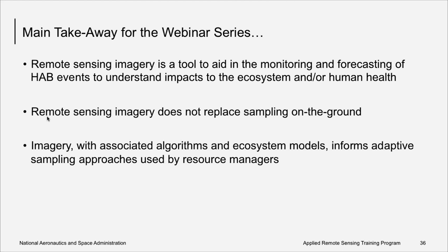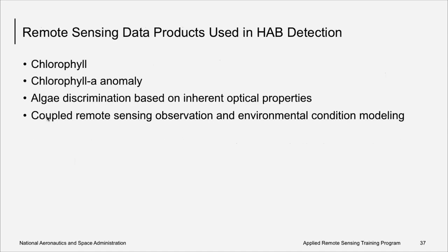So some of the main takeaways, it's important to note that remote sensing imagery is a tool to aid in monitoring and forecasting of HAB events to understand impacts to the ecosystem and or human health. Remote sensing imagery does not replace sampling on the ground. Imagery with associated algorithms and ecosystem models informs adaptive sampling approaches used by resource managers. Some of the remote sensing data products used in HAB detection include understanding the chlorophyll concentration because chlorophyll is a proxy for phytoplankton, a chlorophyll anomaly or how it's changed, algae discrimination based on the inherent optical properties, and coupled remote sensing observation and environmental condition modeling. While research is ongoing to detect toxins using remote sensing methods, it is currently not possible to detect toxins directly operationally using remote sensing imagery.